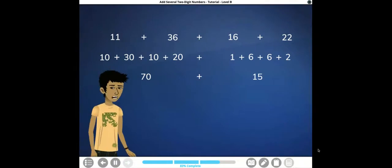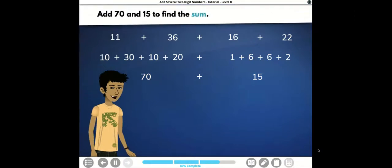Now we are ready to put the tens and the ones together to find the sum. Add 70 and 15 to find the sum. All right, our last one. 70 plus 15. I have 70. I add 10, which is 80. And then I add my 5, which comes to 85. Yep. So the sum of 11, 36, 16, and 22 is 85.